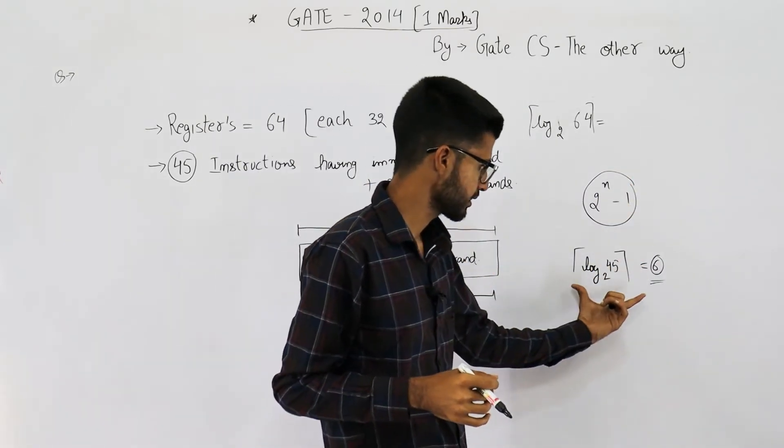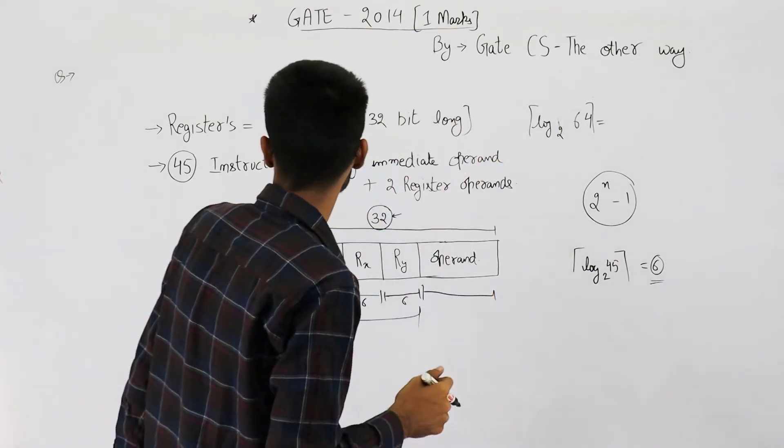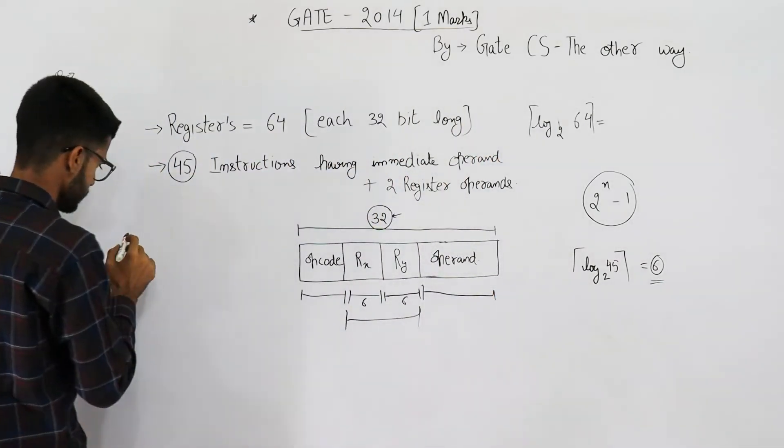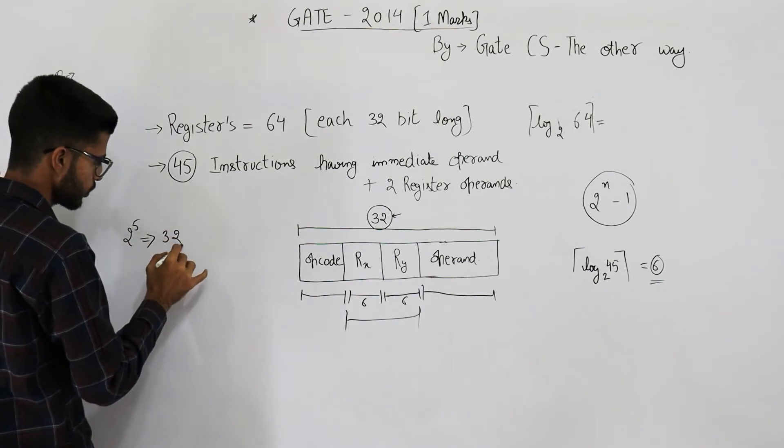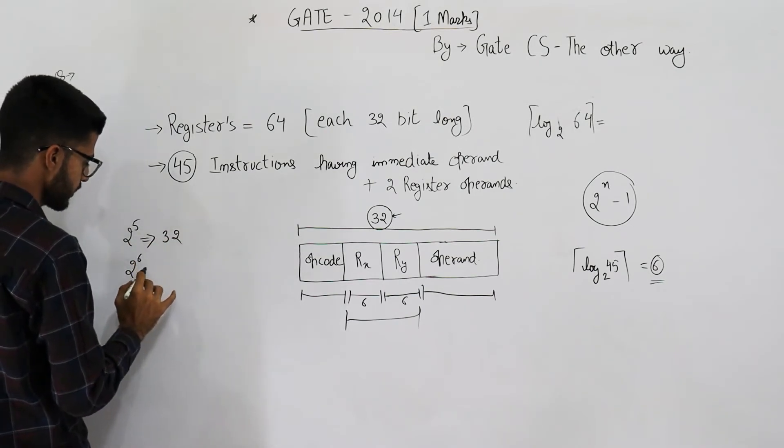But why are we taking ceiling? This is because 2 power 5 is 32, and 2 power 6 is 64.